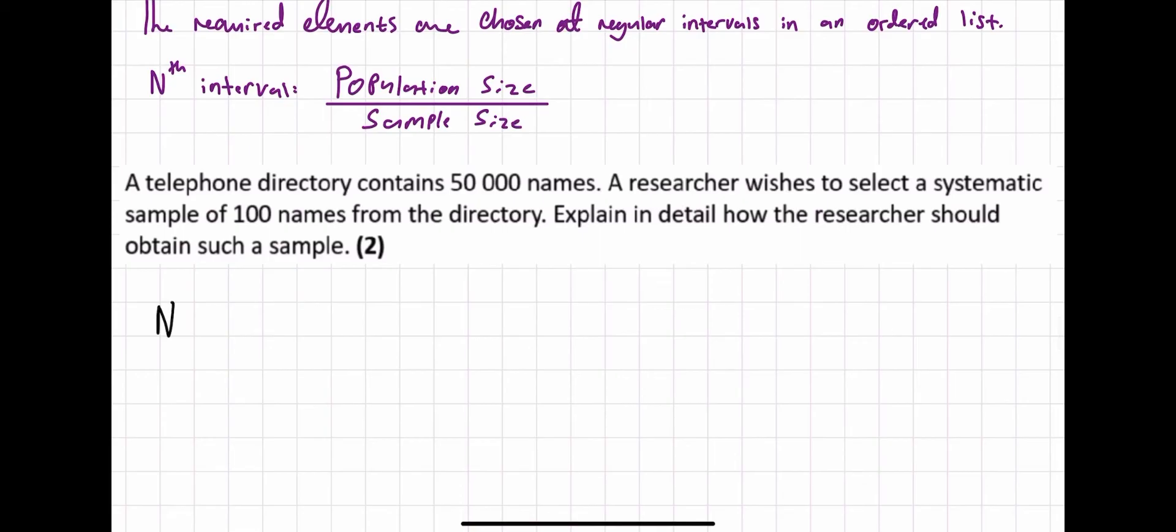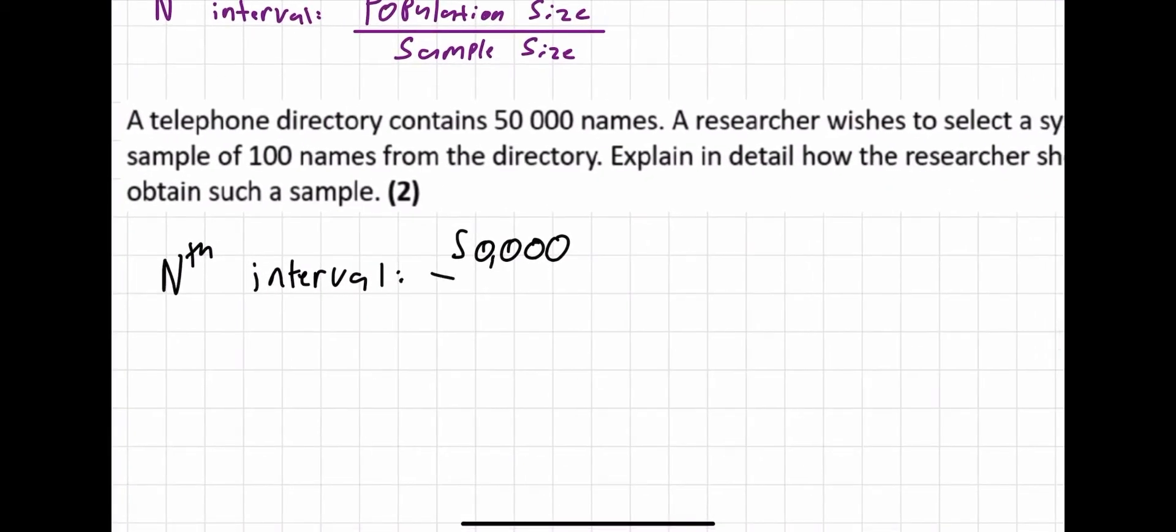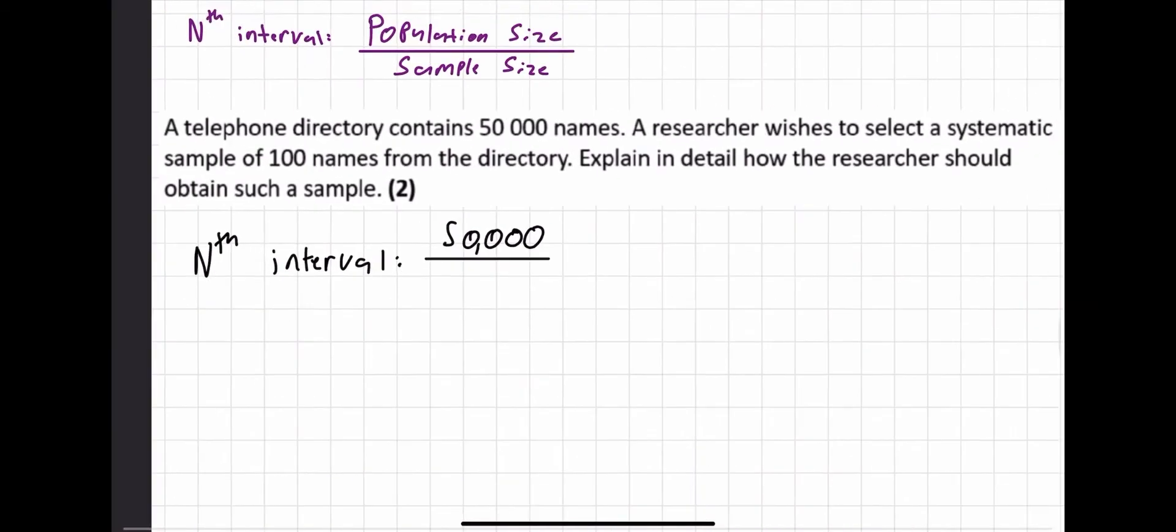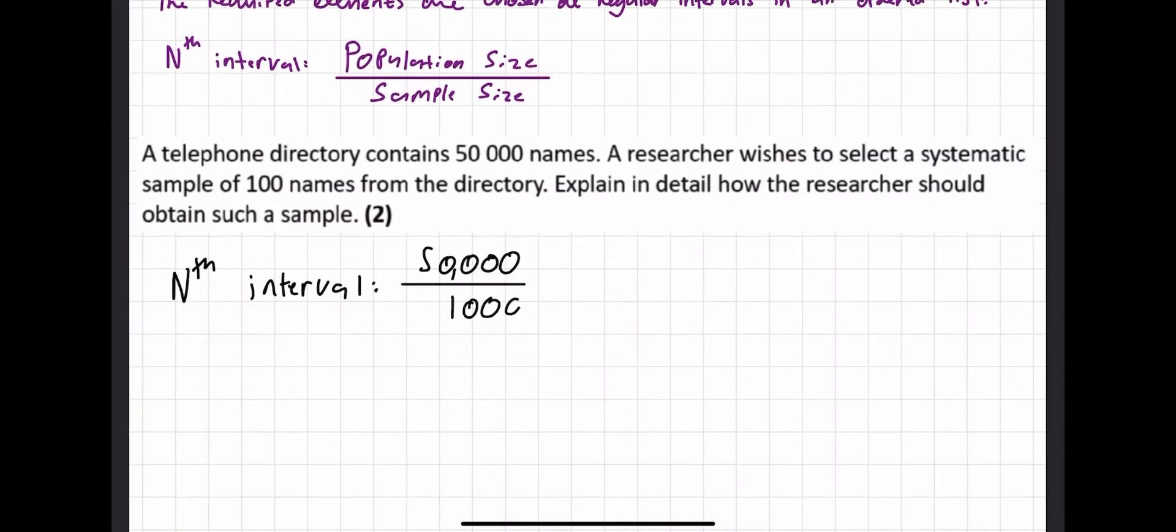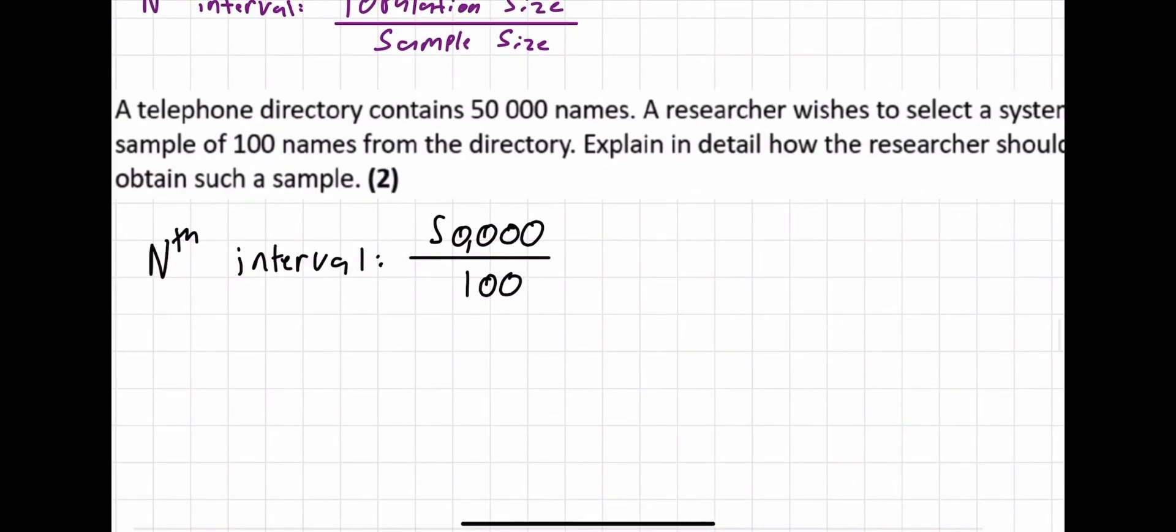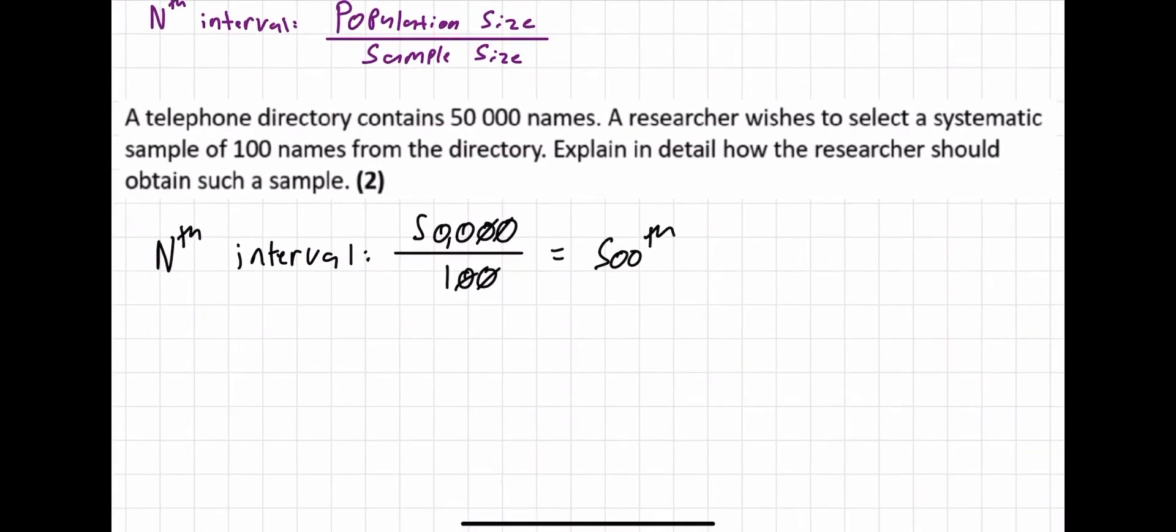So first of all, what is our nth interval? We have 50,000 as our population, so that is 50,000. And our sample size, as stated, is 100 names. That's too many zeros. So that must mean we have, let's get rid of two zeros, 500th as our nth interval.